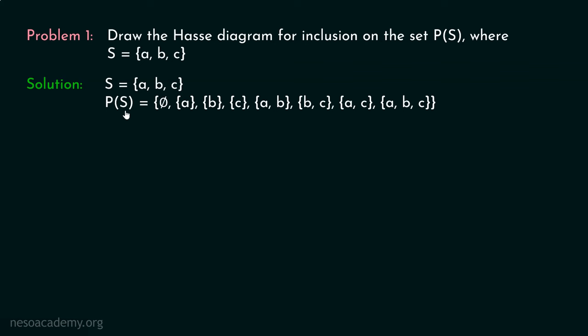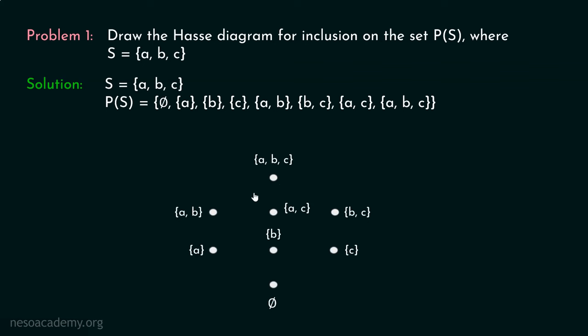We want to define a relation R which consists of all ordered pairs (A, B) such that A is a subset of B. We already know that this relation is a partial order. We want to draw the Hess diagram for it. The Hess diagram must consist of eight vertices representing all these elements. Phi has been placed at the bottom-most place, and {A,B,C} is placed at the top-most place, because phi is a subset of every other set, while {A,B,C} is not a subset of any other set.